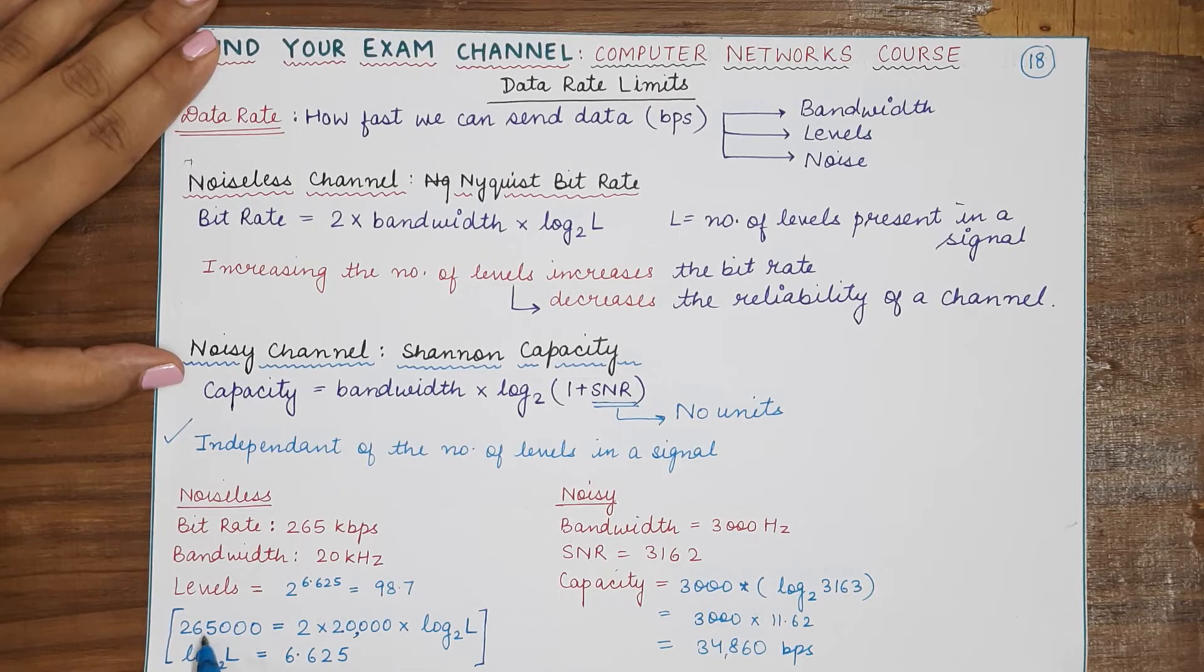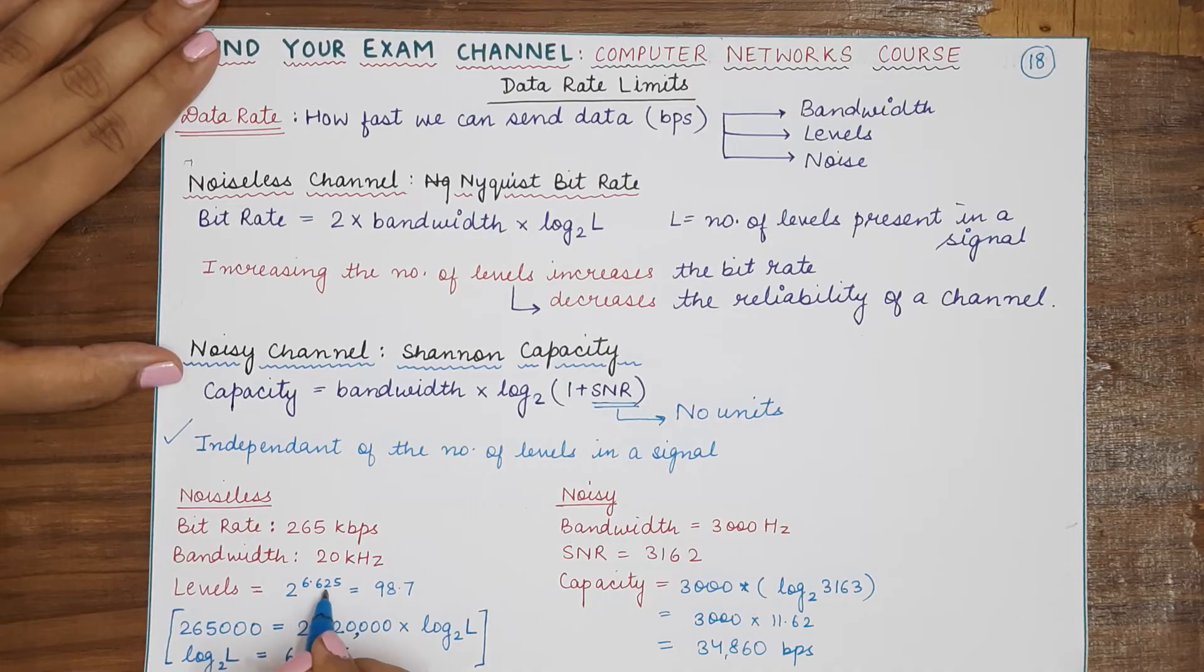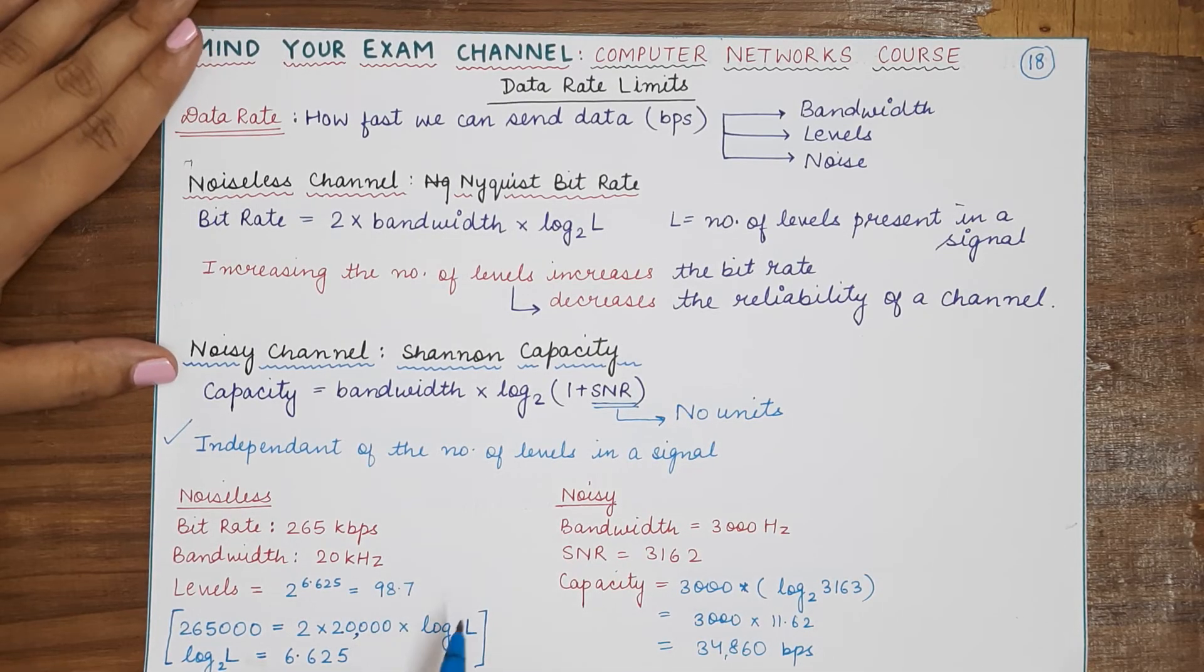Now when you put this equation in this equation, you will get log L base 2 equal to 6.625. Now if you have to calculate the value of L, you will get L by raising 2 to the power 6.625, which is 98.7. So since levels are always an integer, you will be having 99 levels here.